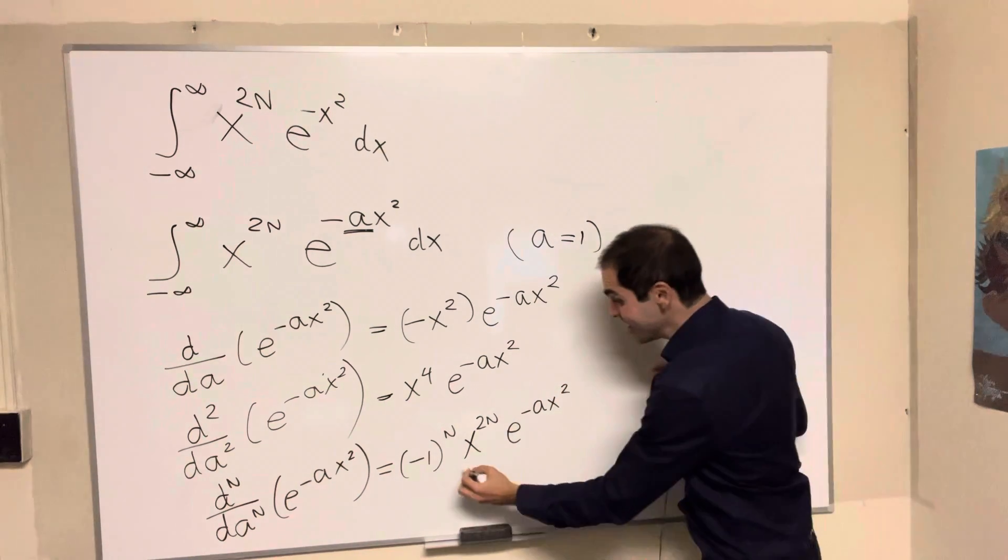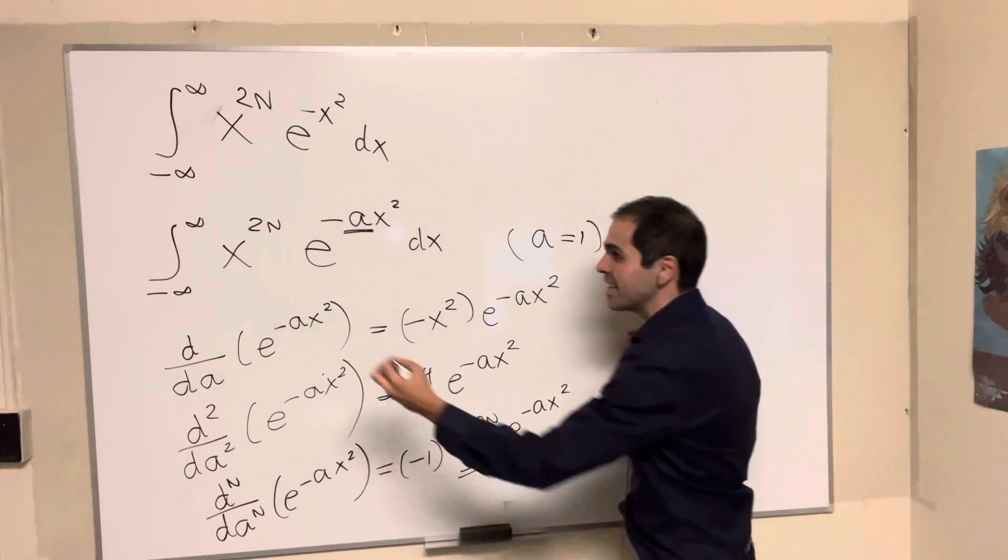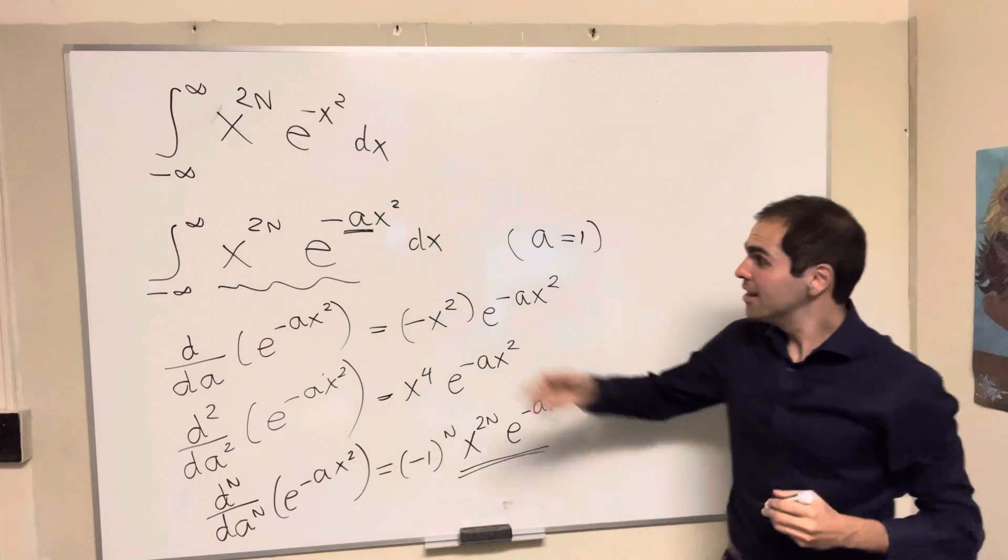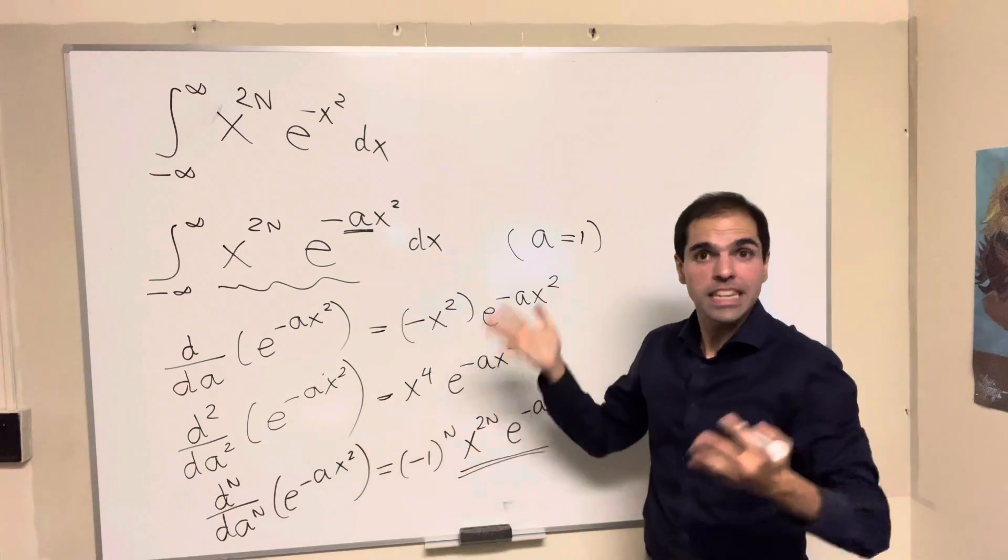And, whoa, notice, this x to the 2n, e of minus a x squared, that's precisely what we have here. So, in fact, this integral that we want is just a hidden derivative.